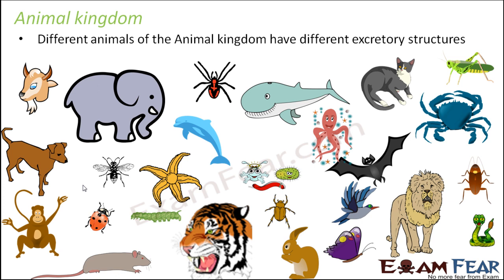Some animals have highly specialized organs — for example, kidneys — for the purpose of excretion. Whereas in other animals, excretion takes place simply through their body surface, so they do not have any specialized organs. It actually differs from one phylum to another. Here we will quickly discuss the different ways of excretion for different animals of the animal kingdom, phyla wise.